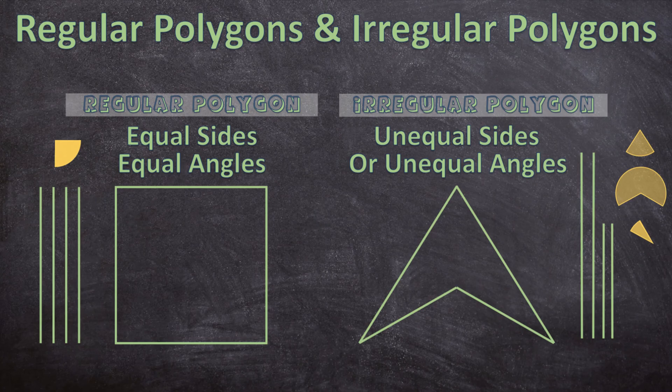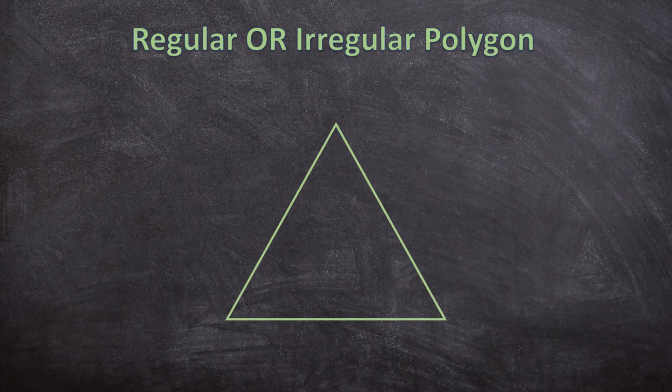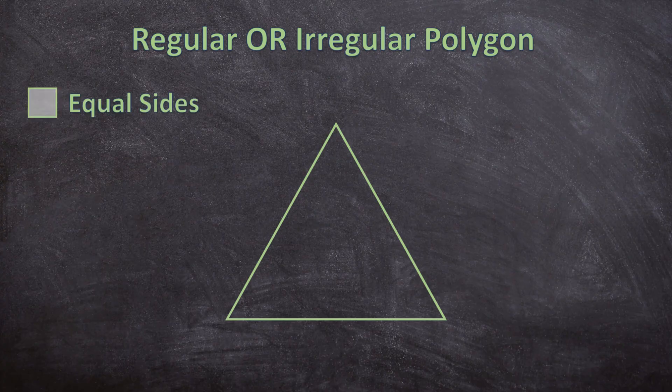Now let's determine if the following three shapes are regular or irregular polygons. For a shape to be a regular polygon it needs to have two characteristics: the first is equal sides, and the second is equal angles.